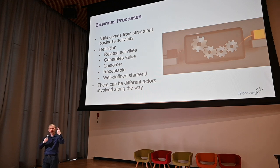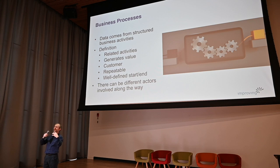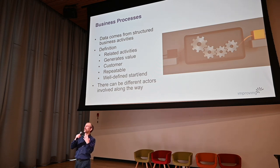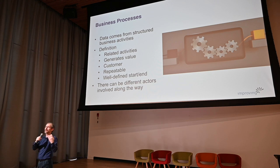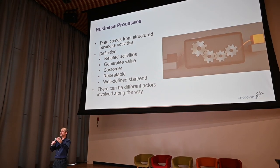What do I mean by related activities? If you have a process where this happens, this happens, and this happens, and you take out one of those activities, your business process either gets really shaky or it fails completely. There's a relationship from one activity to the next. The next thing is value — if you don't know what the value of your process is, stop doing it, because it's a waste of time. I've asked people what the value is of doing something and they couldn't answer it. That's a bit of a problem.